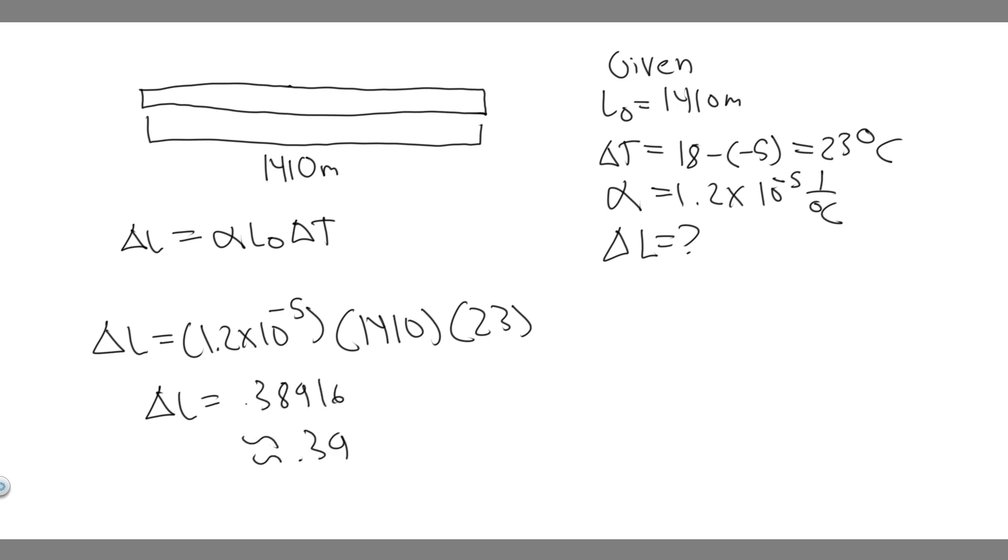So it's basically about 0.39, and then keep in mind our units are meters. So we know that the temperature is increasing, and when something increases, that basically means it expands. So when the temperature increases, something expands. So we know it's going to increase by 0.39 meters.